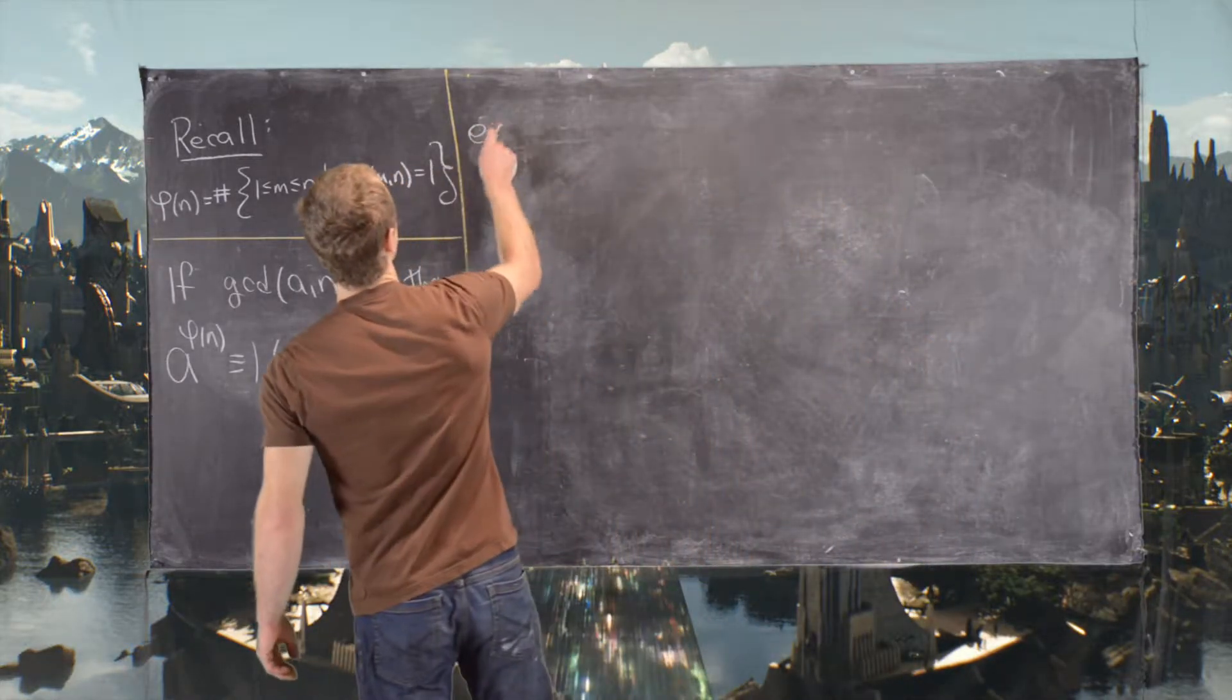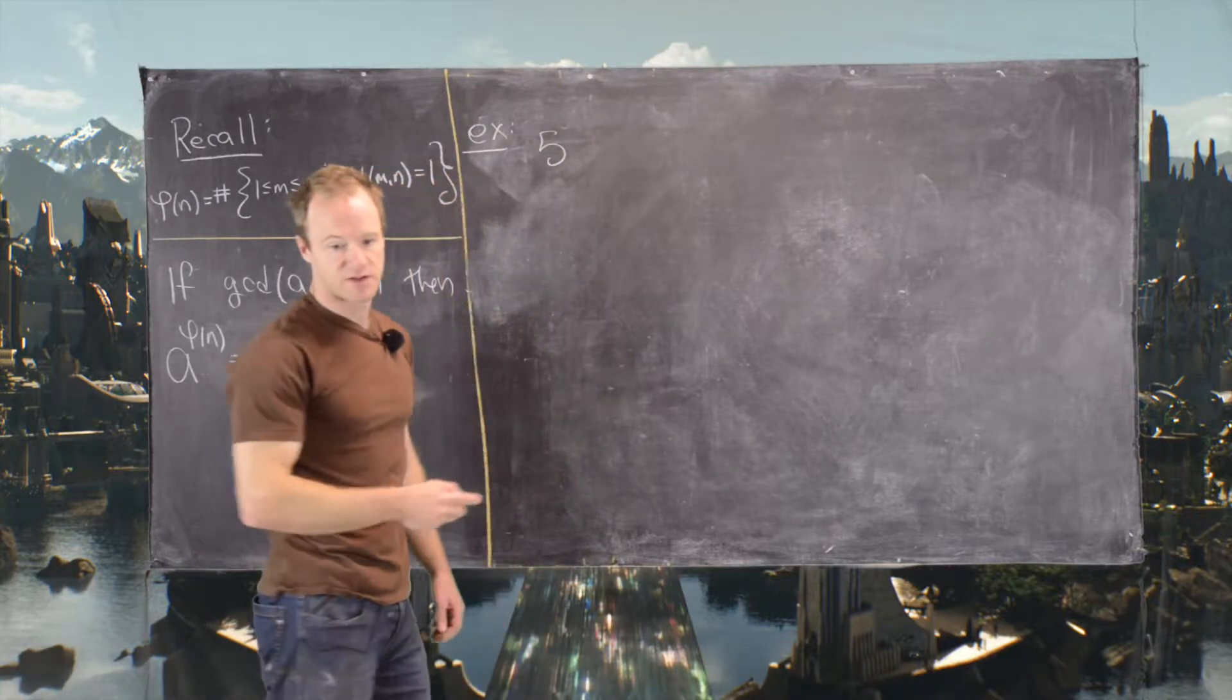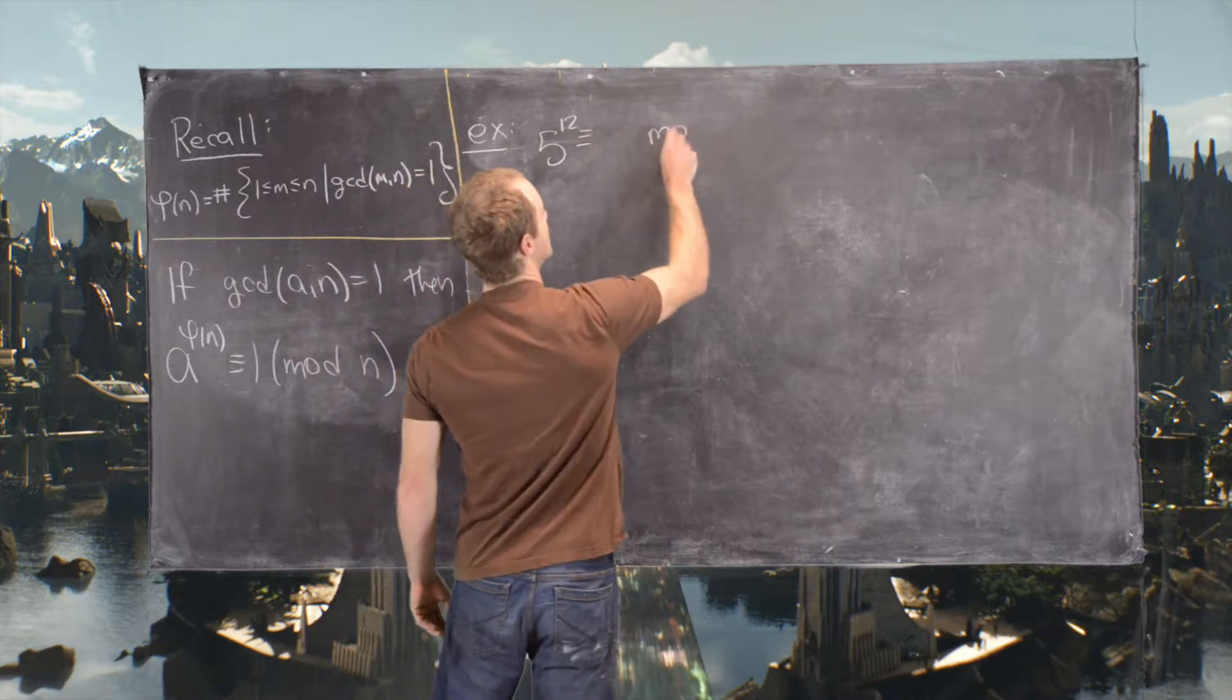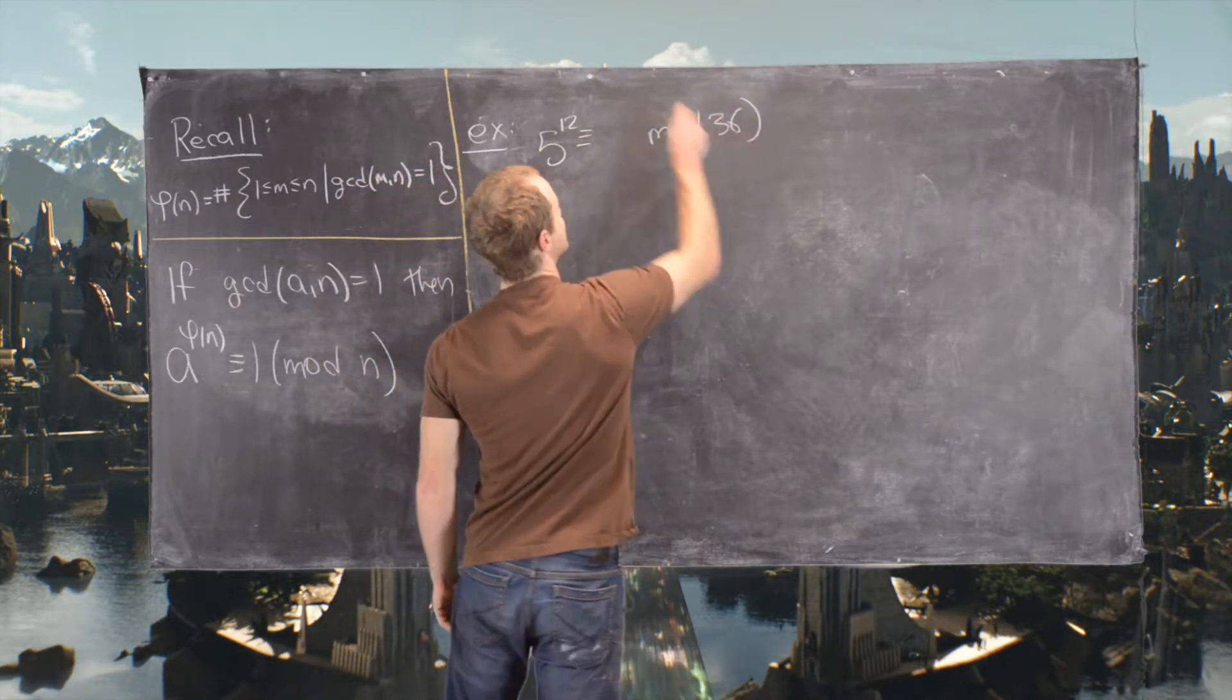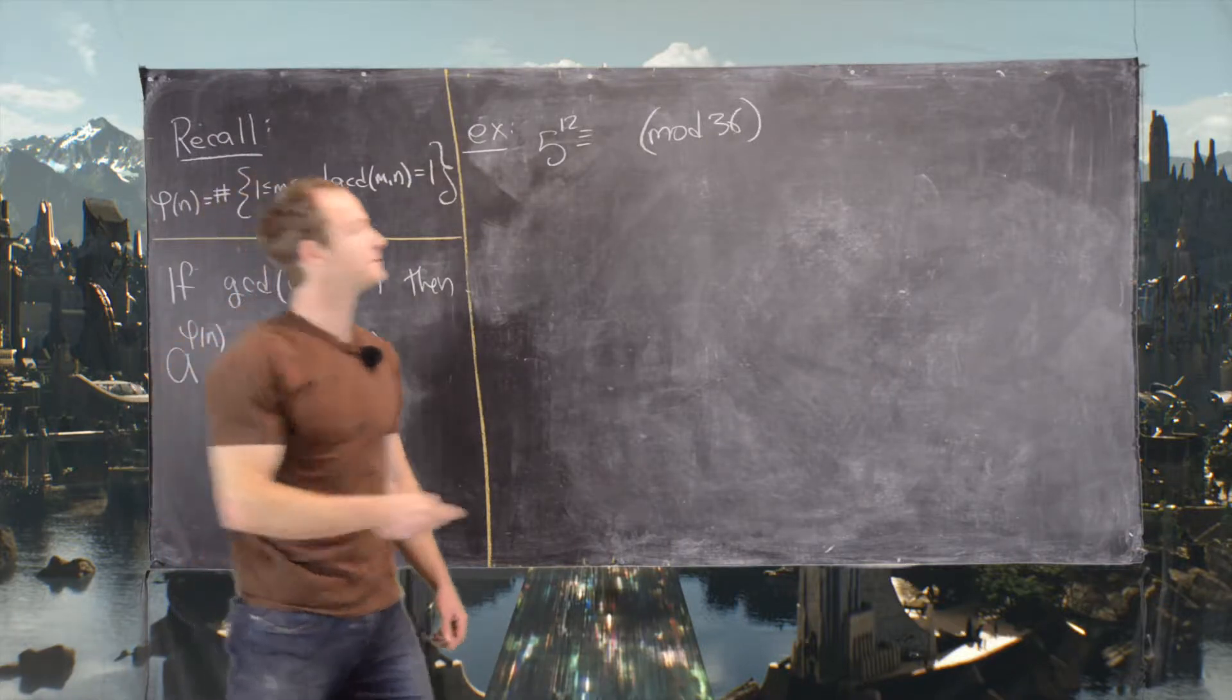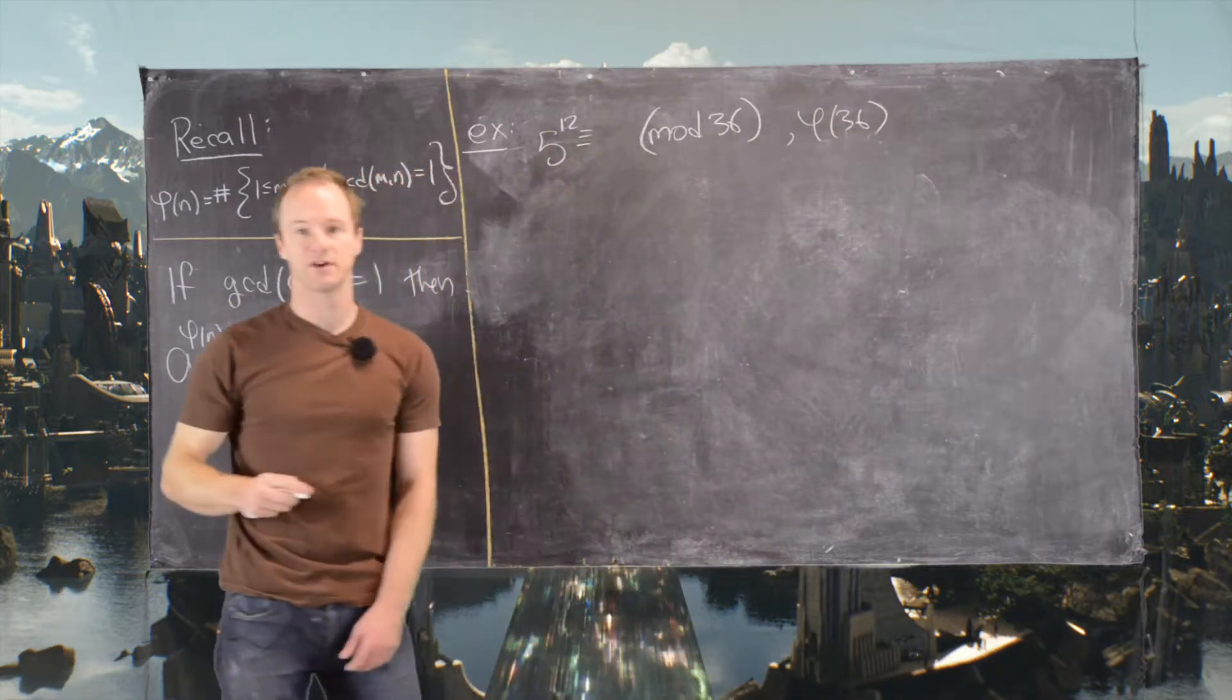Let's first look at the following: 5 to the 12 is congruent to something mod 36. Let's see what it's congruent to mod 36. We would probably want to start off by calculating phi of 36.